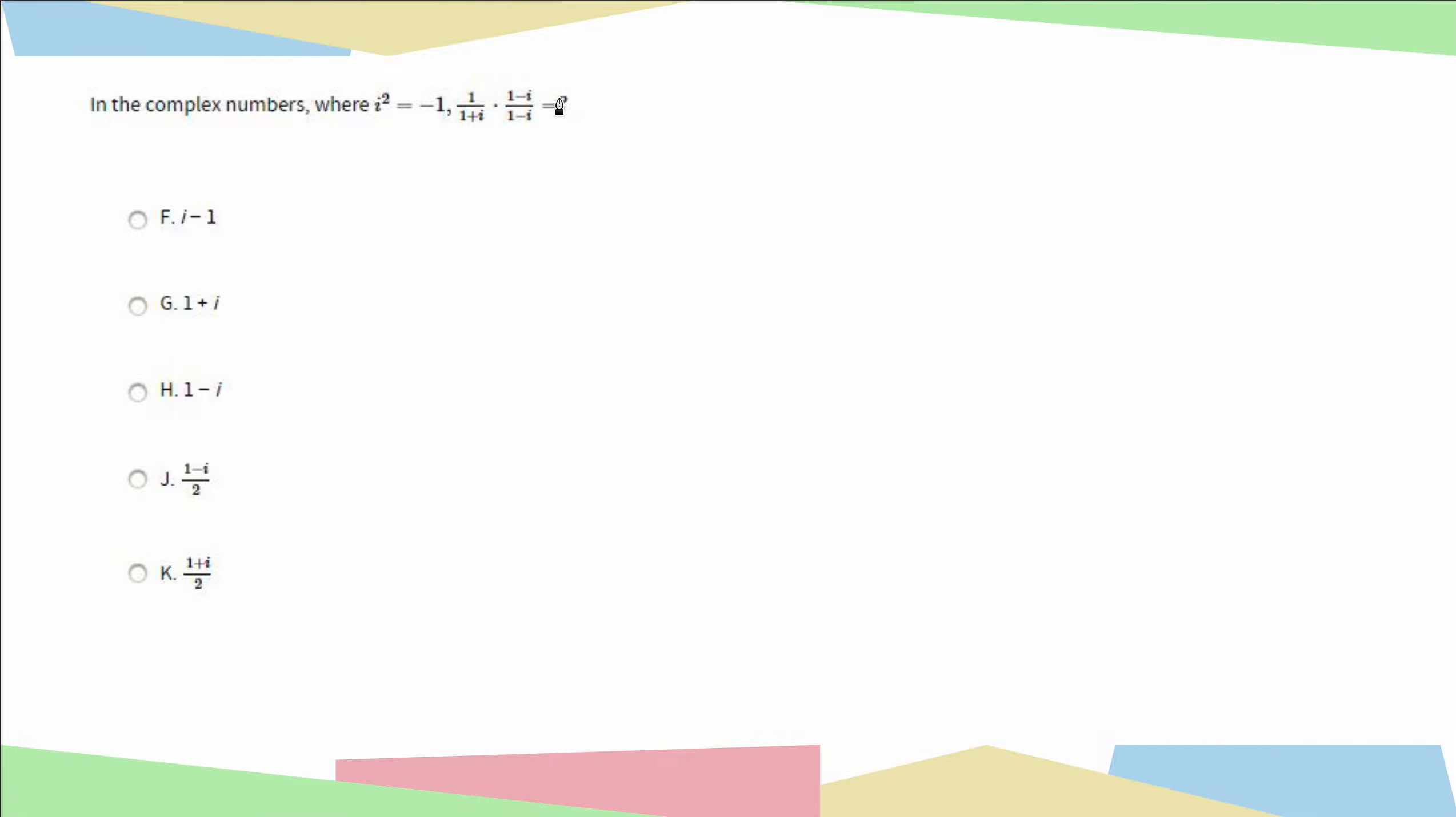So now let's go ahead and multiply. In the top, since this is 1 and I'm just multiplying straight across, this is just going to equal 1 minus i, because anything times 1 is just itself.